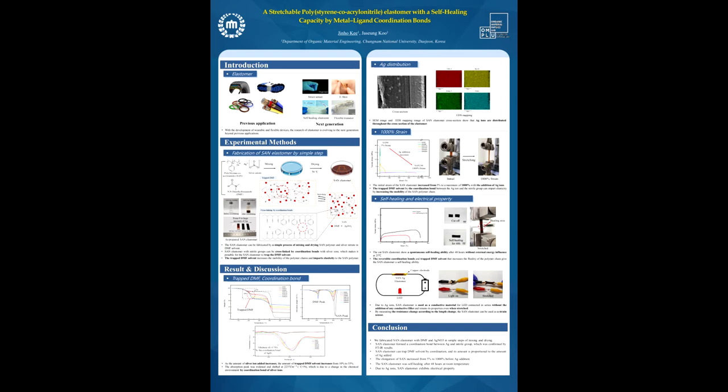We also measured SEM and EDS mapping images to confirm the dispersion of silver ion in SAN elastomer. SEM and EDS mapping images of SAN elastomer cross-section showed that silver ions are distributed throughout the cross-section of elastomer.